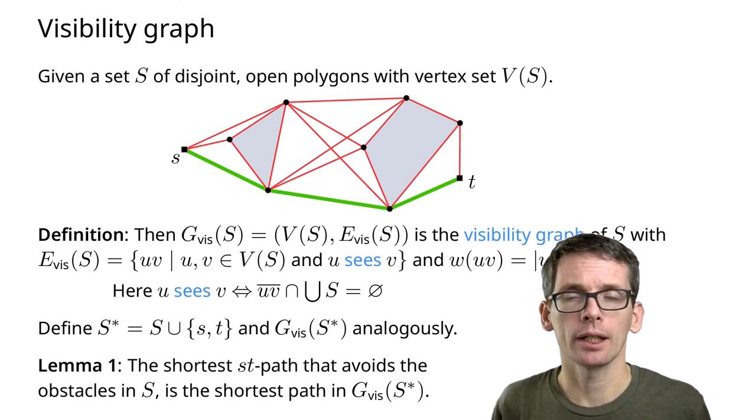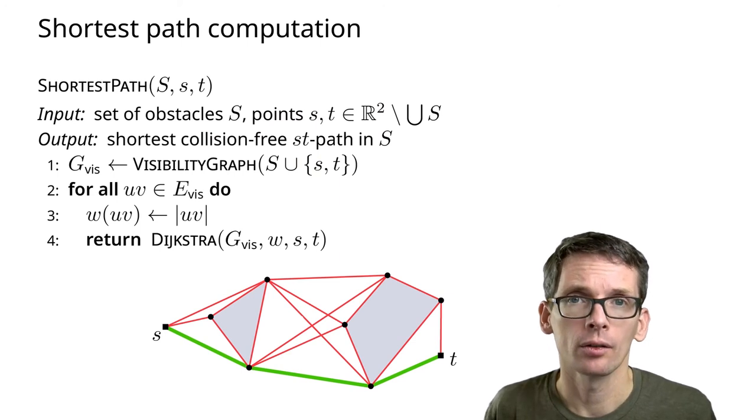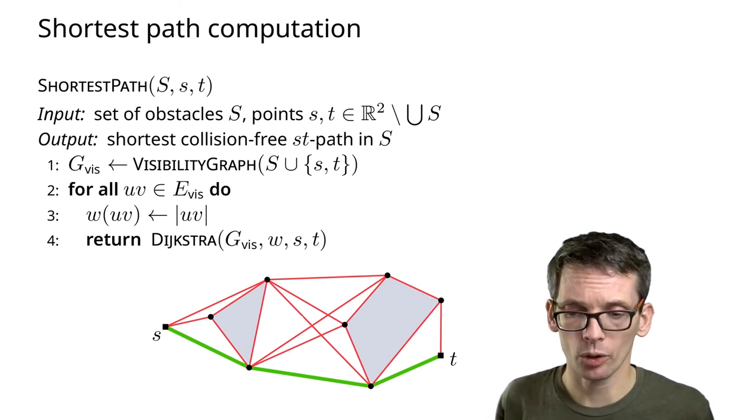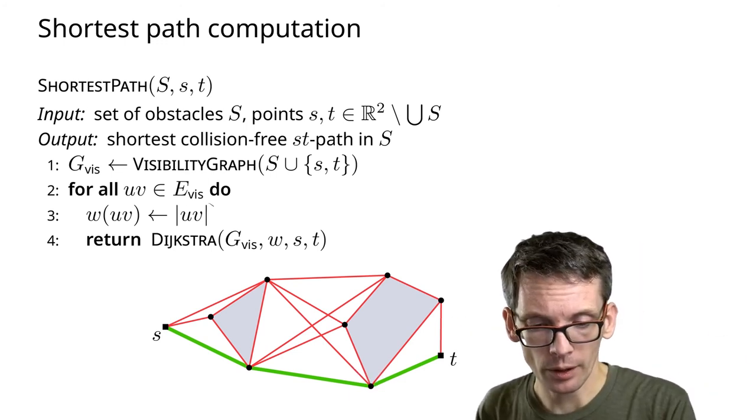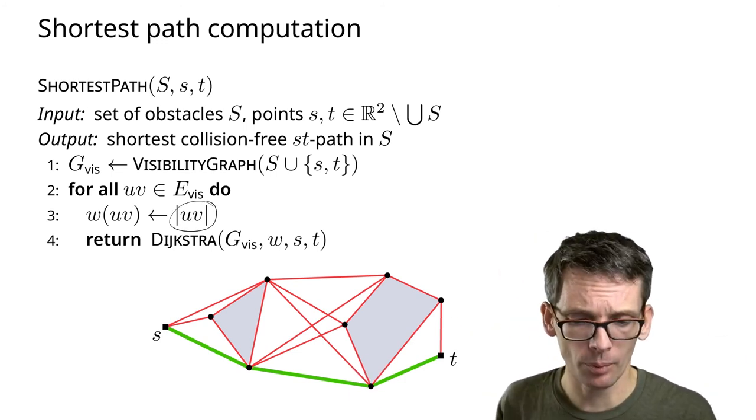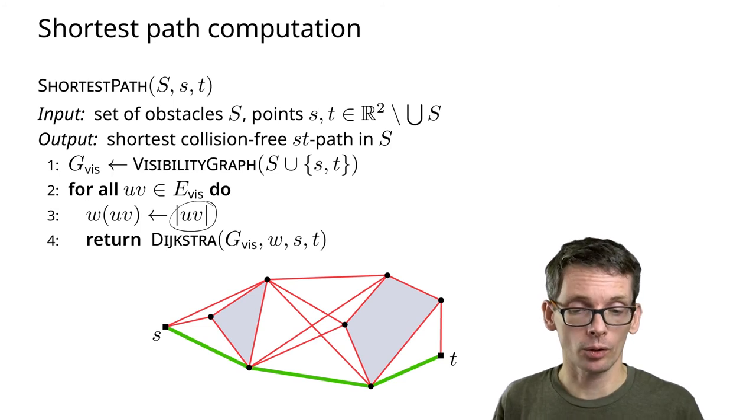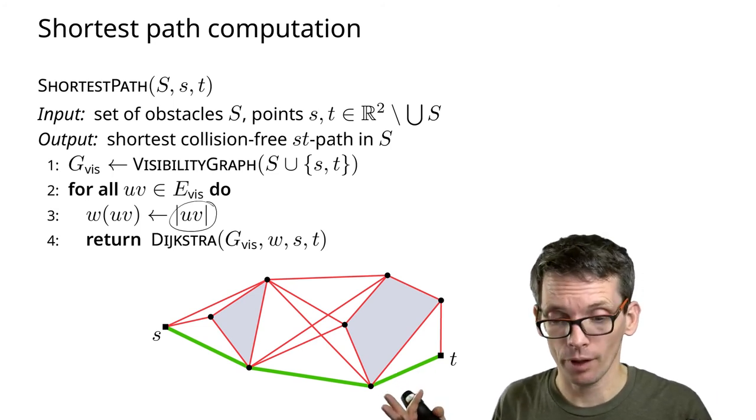With this, it's easy, or at least conceptually easy, to compute shortest path. We compute the visibility graph, we set the weight to the length of the line segment, and then we're going to use any shortest path algorithm on that graph.